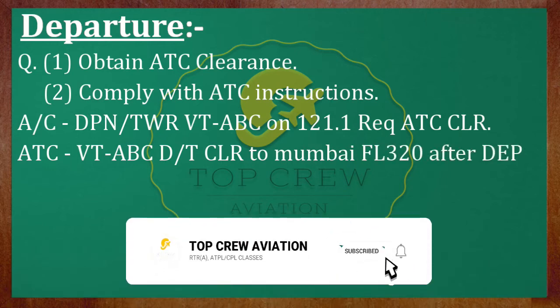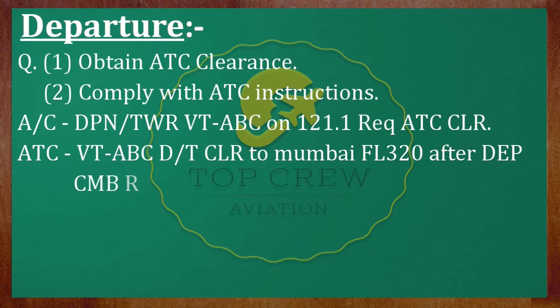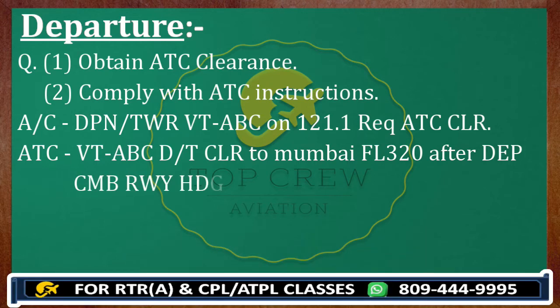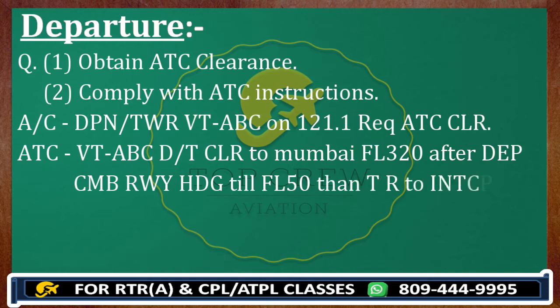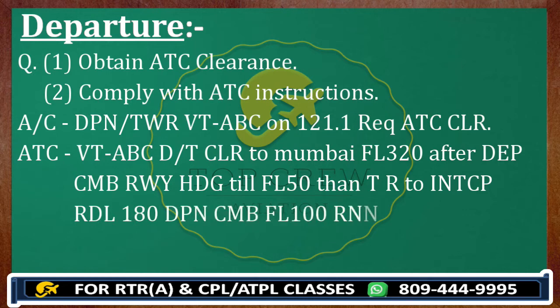Clear to Mumbai, flight level 320. After departure, climb runway heading till flight level 50. Then turn right to intercept radial 180, Delhi Papa November. Climb flight level 100, resume normal navigation thereafter. So this is the clearance.